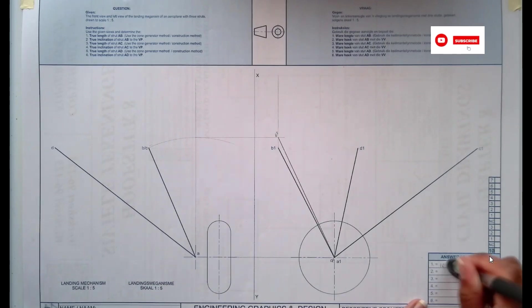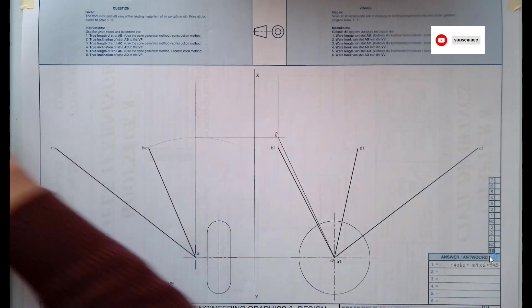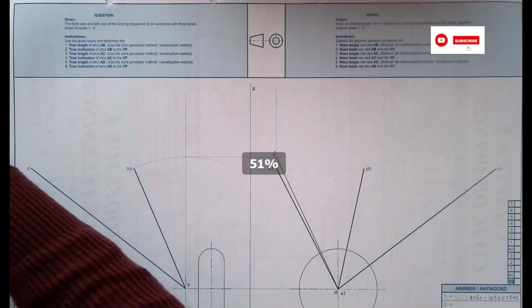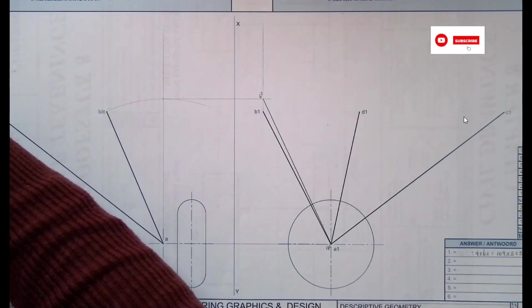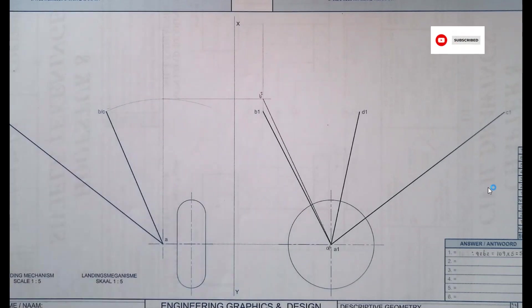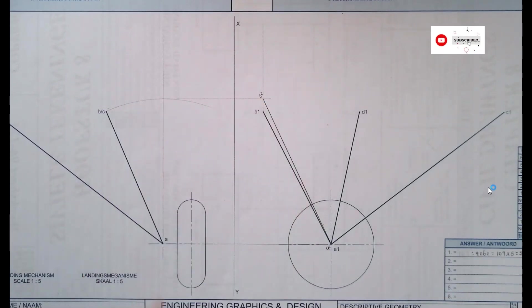You don't even need to write this 109 here. You can just go straight to writing A2 B2 is 109. So you basically measure the length there, multiply it by scale, which is 1 is to 5, and then you get your dimension there.